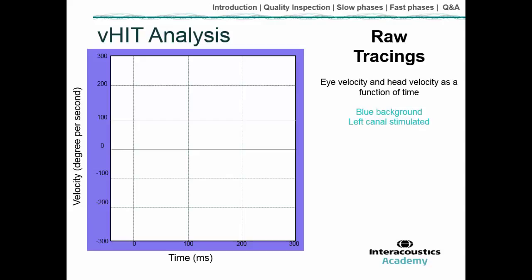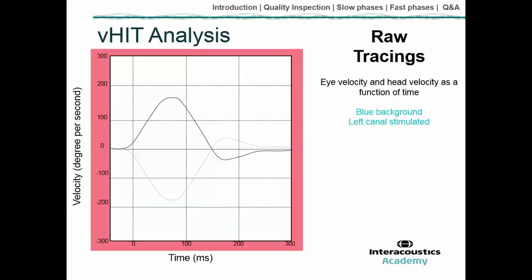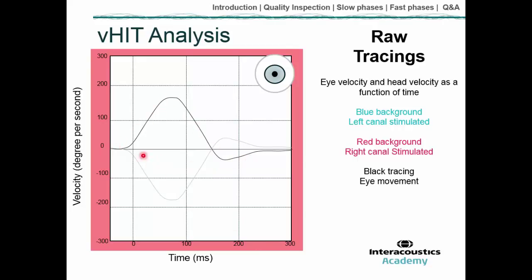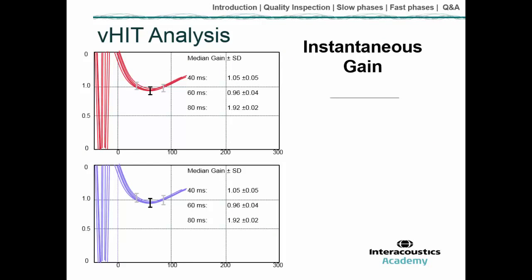The colour of the background is important: a blue background indicates the left canal has been stimulated, and a red background indicates the right canal. On the raw recording, the black line corresponds to eye movement and the grey line corresponds to head movement. We're looking for the eyes to move in an equal and opposite direction to the head, which is what the VOR does when working correctly. The next graphs show instantaneous gain, which displays the slow phase VOR response — the true vestibular response.